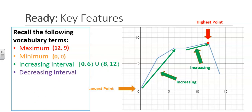A decreasing interval is where the function is decreasing. In this case, it is decreasing on the interval 12 to 14, with 14 included.